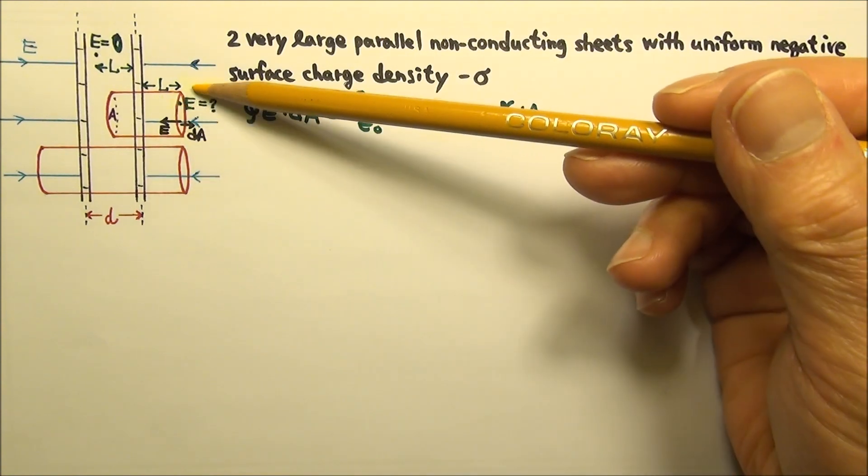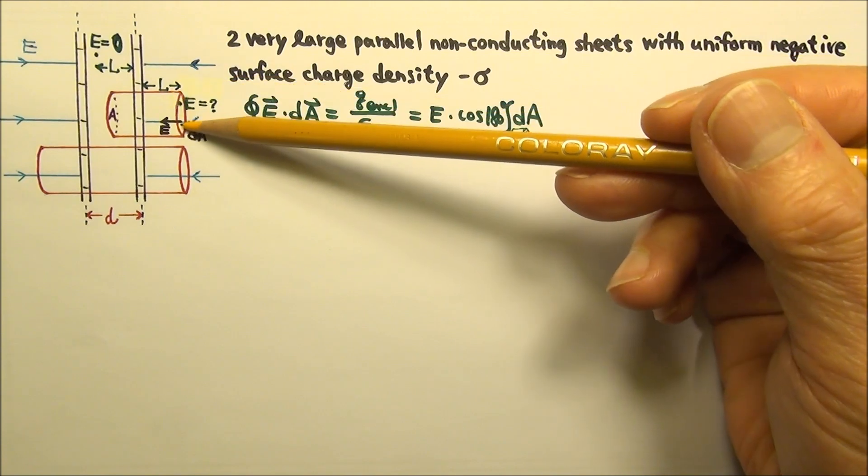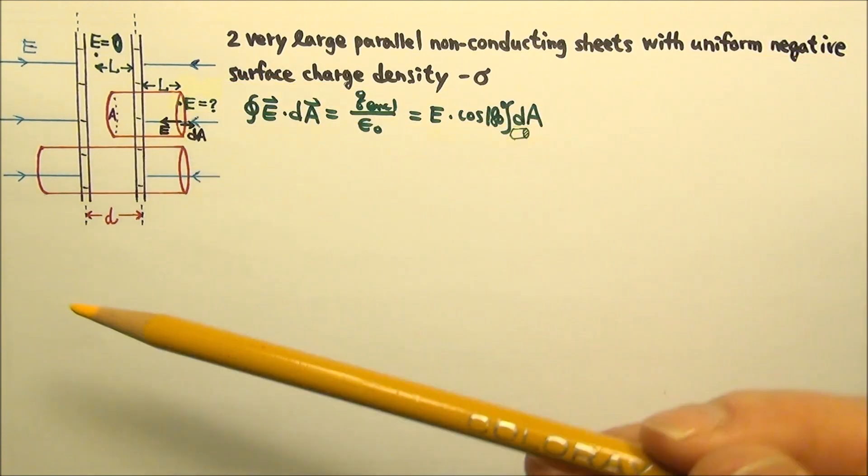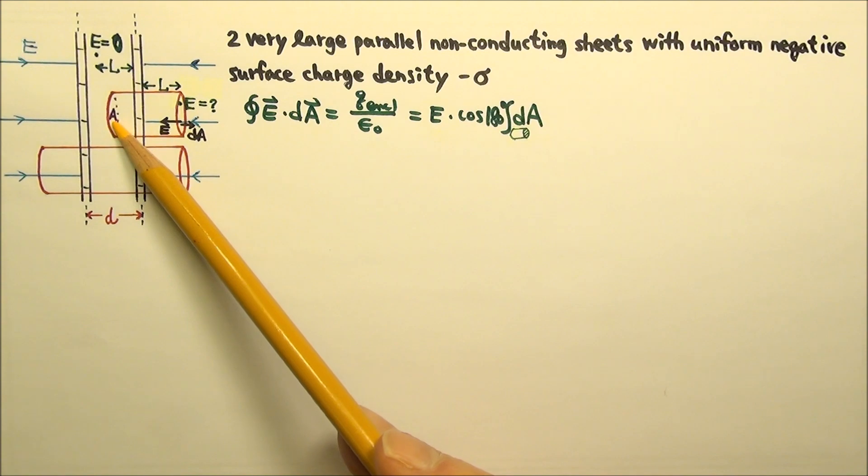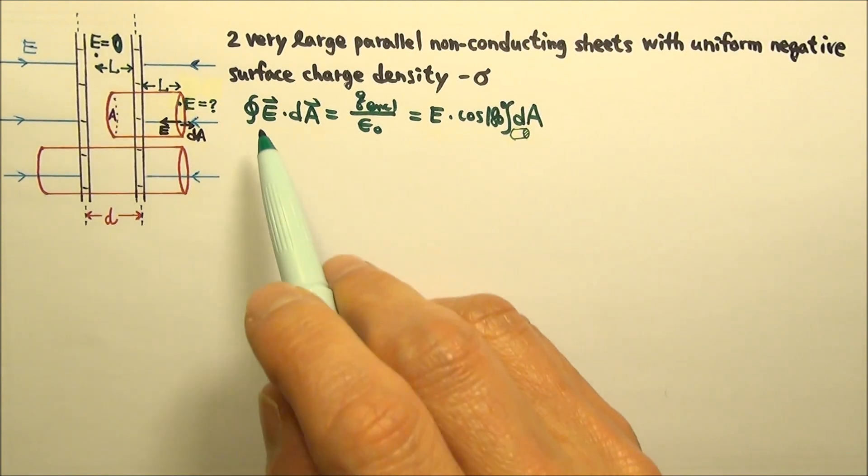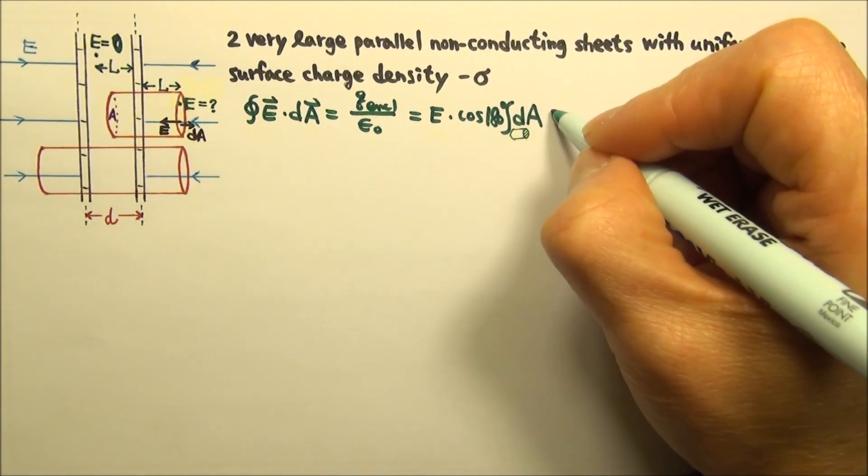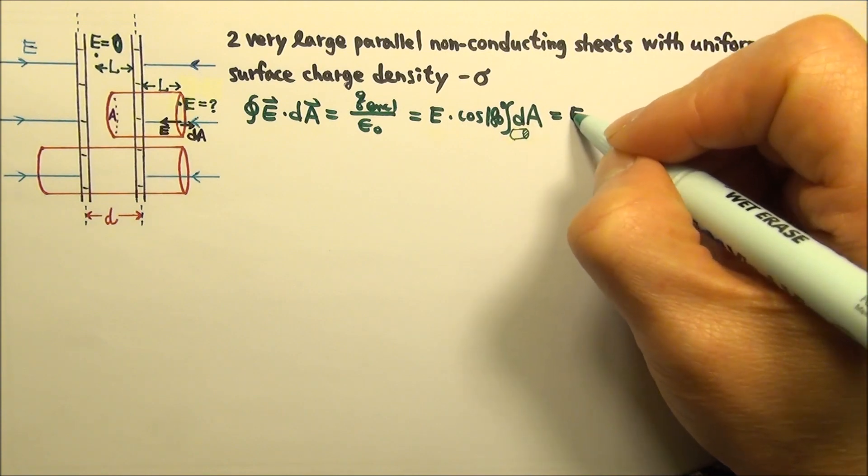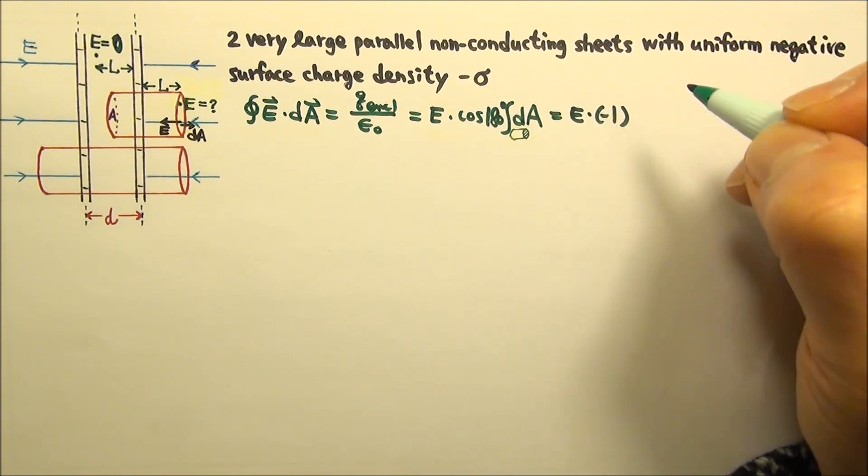But there is no requirement on how big we must make this area. So we can just make this cross-section an arbitrary area A. So the flux through this Gaussian surface is e times cosine 180, which is negative 1,